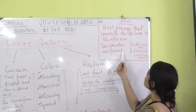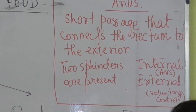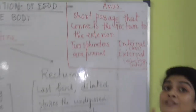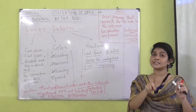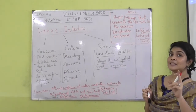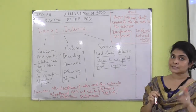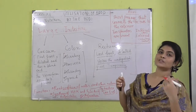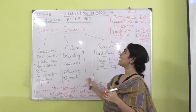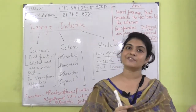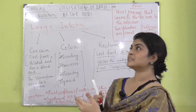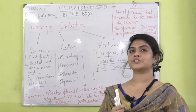The anus is the last and outermost part of the digestive system. It is a short passage connecting the rectum to the exterior of the body. It has two types of sphincter muscles: the internal sphincter muscle, under the control of the autonomic nervous system, and the external sphincter muscle, which has voluntary control, so that the undigested part of the food can come out of the body as stool. In the next part of the video, we will discuss the different digestive glands and the chemical process of digestion — which enzymes are released in which part and what functions they possess.